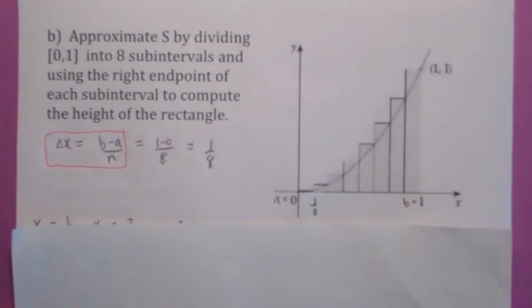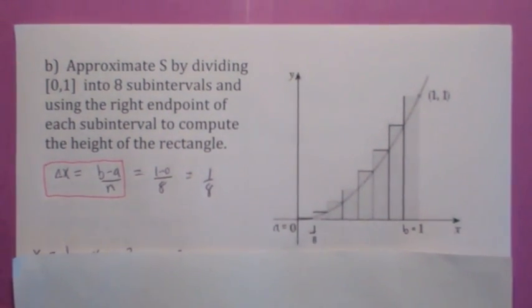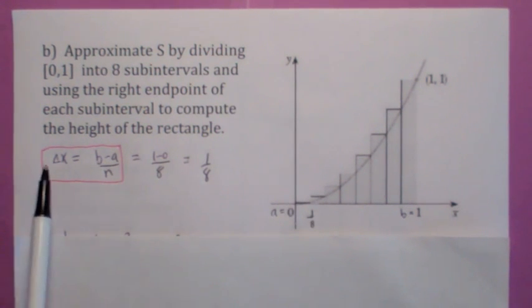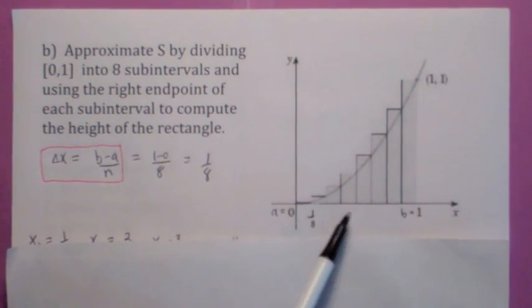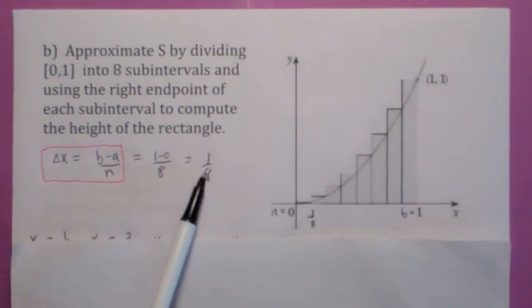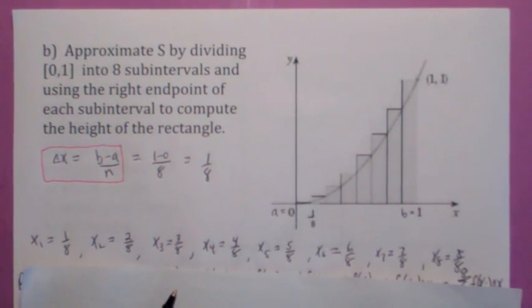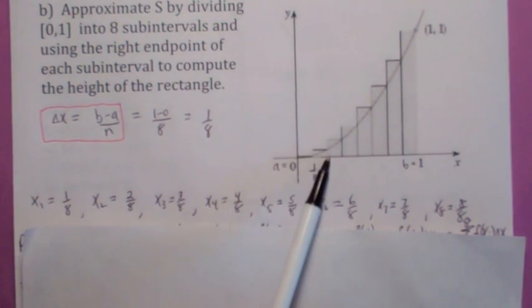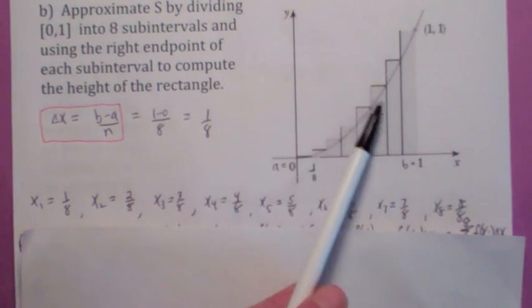Let's refine our estimate now. Instead of using 4 subintervals, let's use 8, and we're going to continue to use the right endpoint. So if you're going to use 8 subintervals, then each subinterval is going to have width b minus a over n — 1 minus 0 over 8 — which becomes 1 eighth. The right endpoint of the first interval is 1 eighth, the right endpoint of the second is 2 eighths, and these are the numbers we plug into the function to get the height of each rectangle.